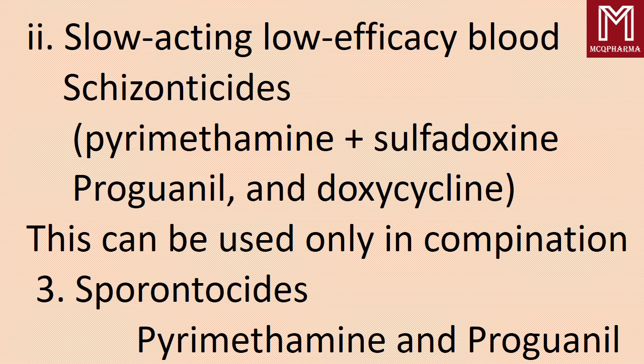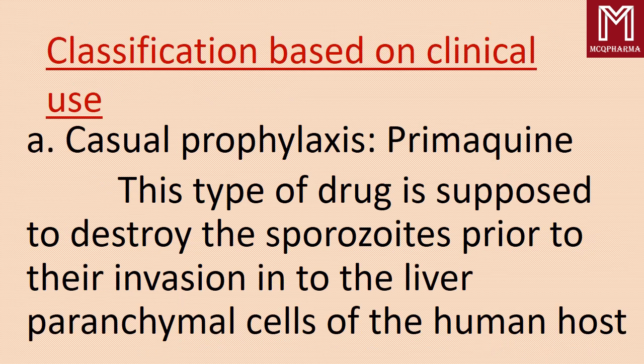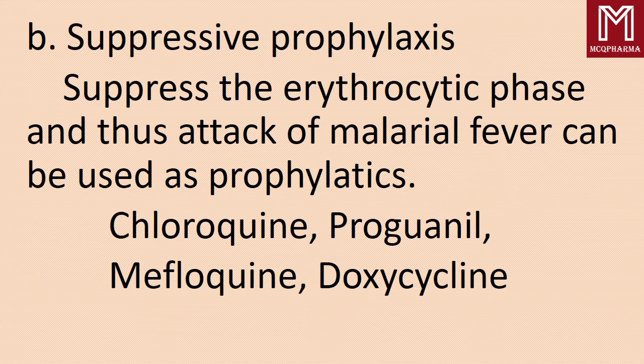Next, sporonticides. Classification based on clinical use. First, casual prophylaxis — example: primaquine. This type of drug is supposed to destroy the sporozoites prior to their invasion into the liver parenchymal cells of the human host. Next, suppressive prophylaxis — suppresses the erythrocytic phase, and thus attacks of malarial fever can be prevented. Examples: chloroquine, proguanil, mefloquine, and doxycycline.